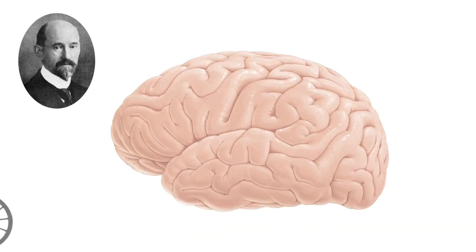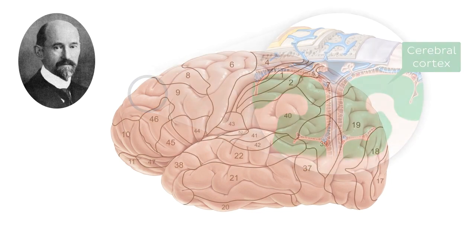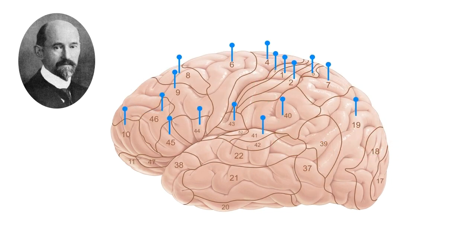In the early 20th century, he described the cerebral cortex according to its cytoarchitecture, or its histological structure and organization. In doing so, he mapped the brain into 52 areas, which have since been correlated to various cortical functions.